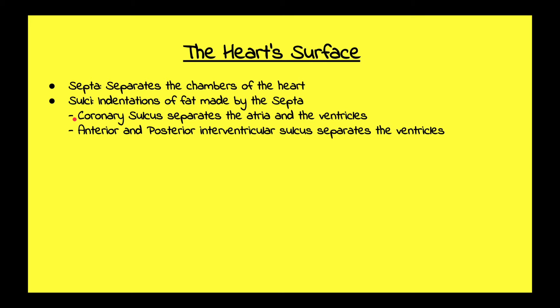If you look closely at the name, it can give you a feel of which chambers of the heart it's separating. Referring back to anatomy, coronary means a horizontal plane, so that tells you the coronary sulcus separates the atria and the ventricles. And the anterior and posterior interventricular sulcus — the name 'interventricular' tells you it separates the ventricles; it intervenes right between the ventricles. If you look at a picture of the heart, you will see blood vessels running up and down these indentations of fat, because sulci are usually where blood vessels of the heart lie.